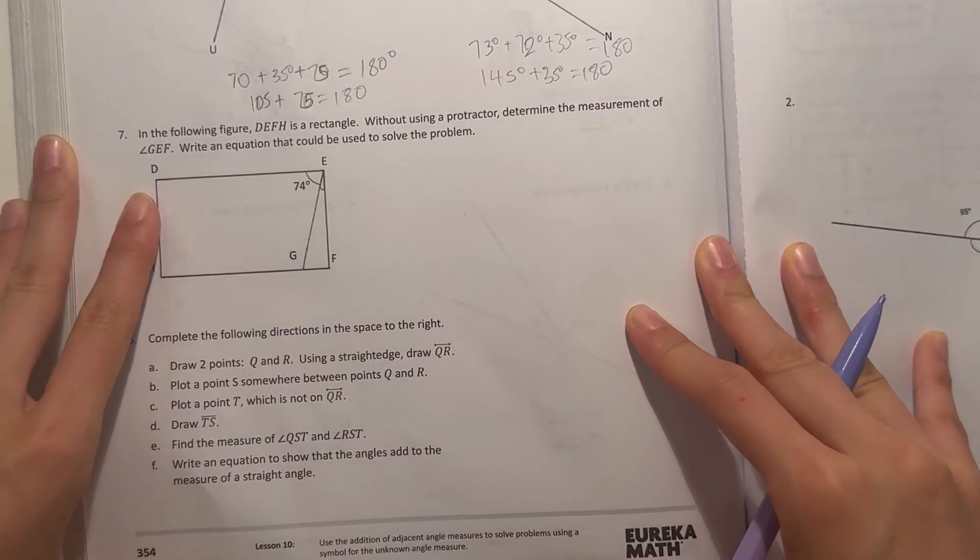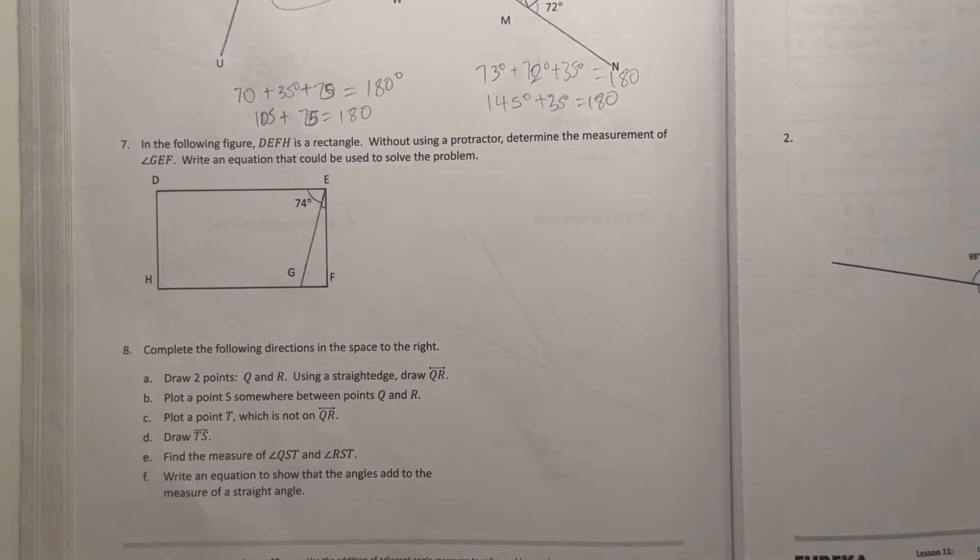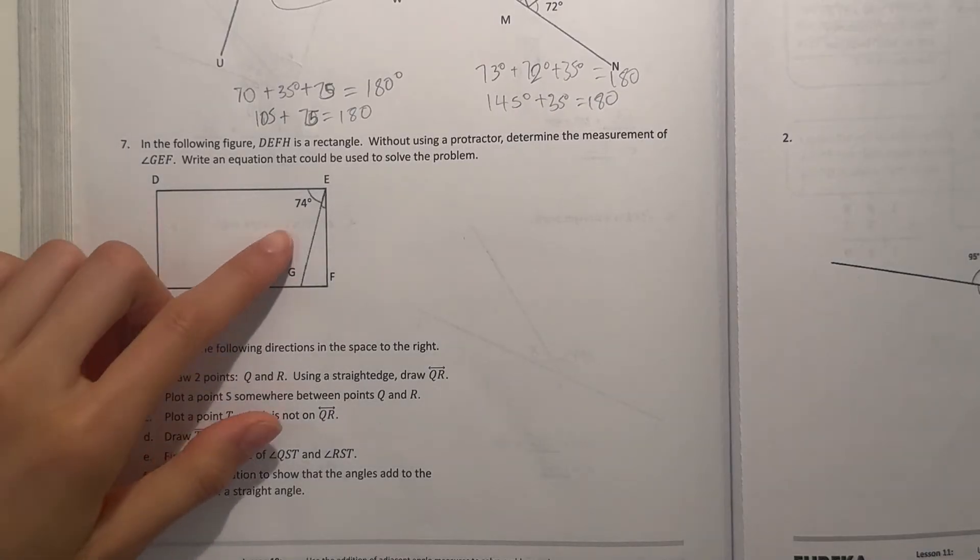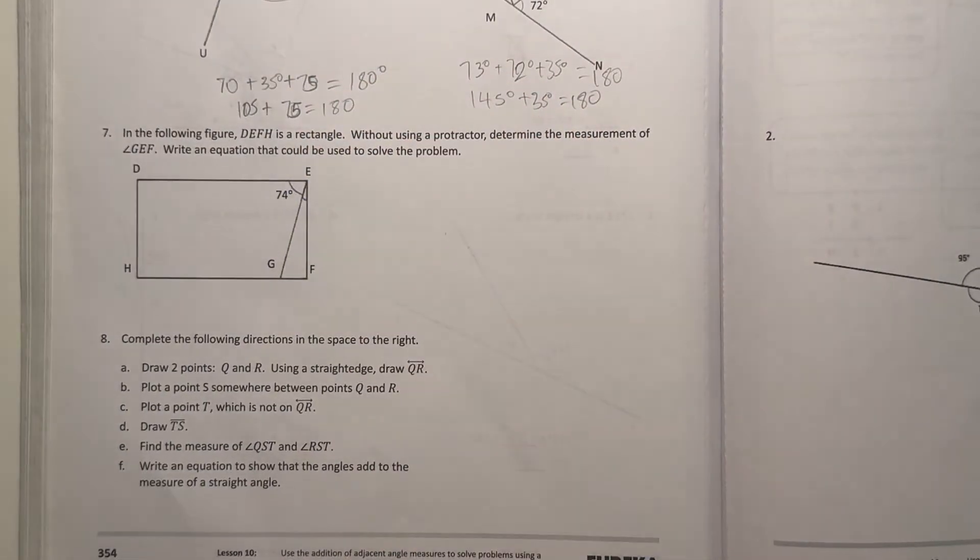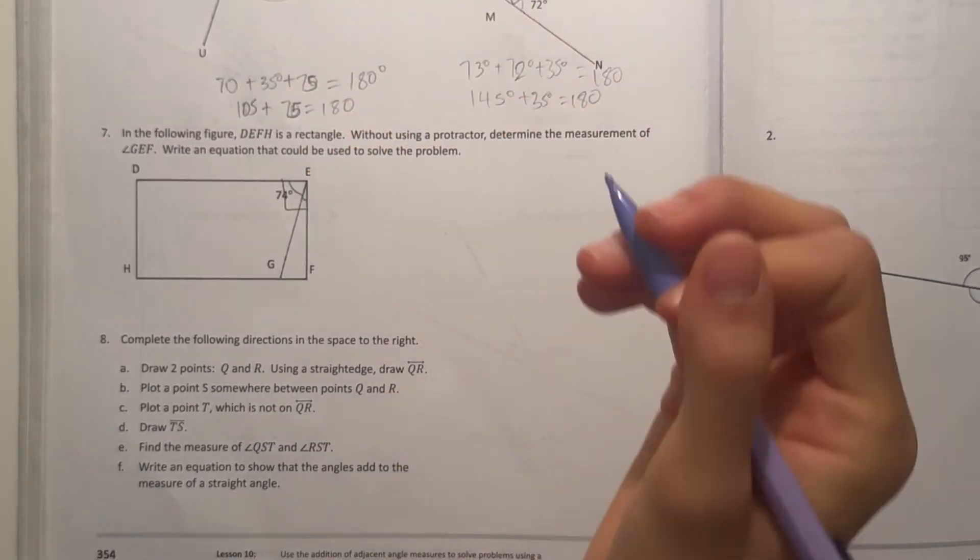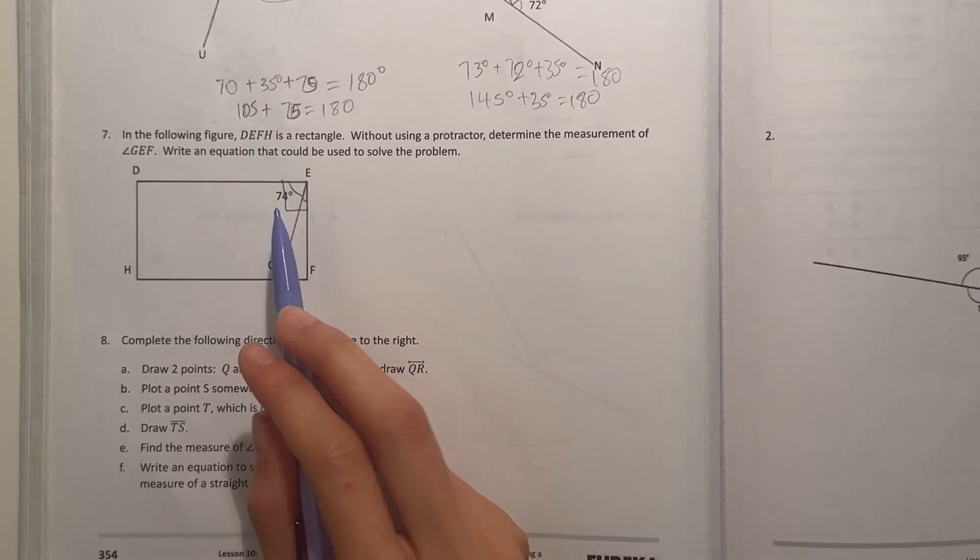All right, number seven. In the following figure, DFFH is a rectangle. Without using a protractor, determine the measurement of GEF. All right, so GEF. Well, let's see, here this is a right angle and we're already given one measurement.